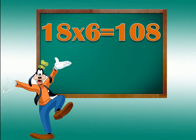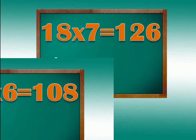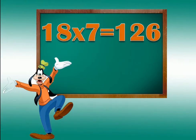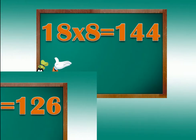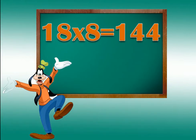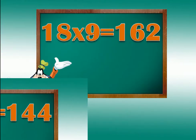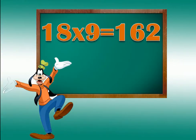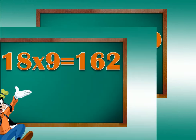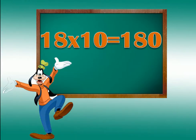18 sixes are 108. 18 sevens are 126. 18 eights are 144. 18 nines are 162. 18 tens are 180.